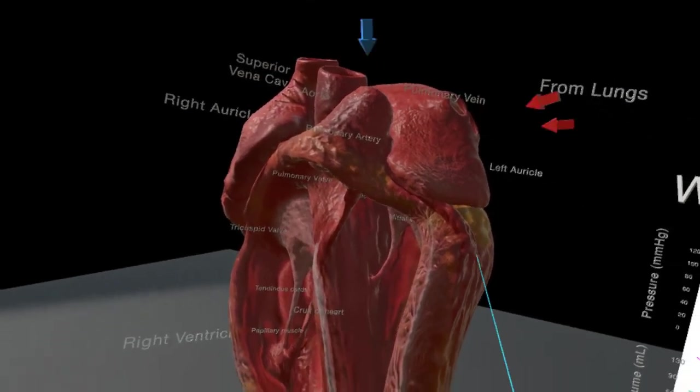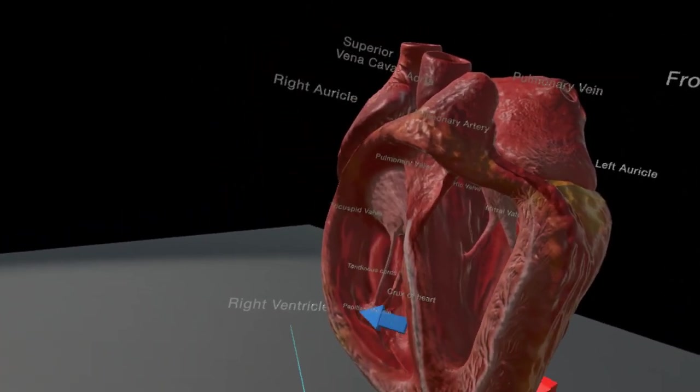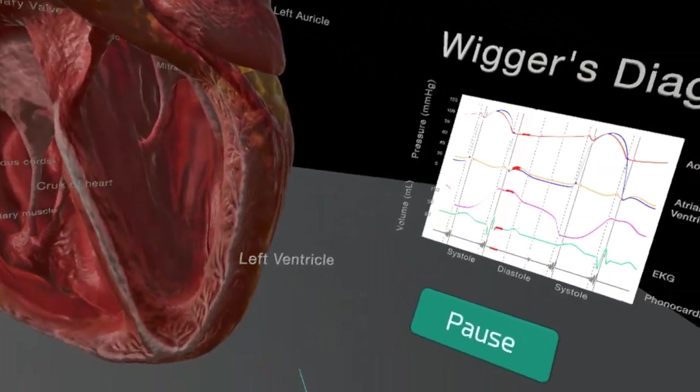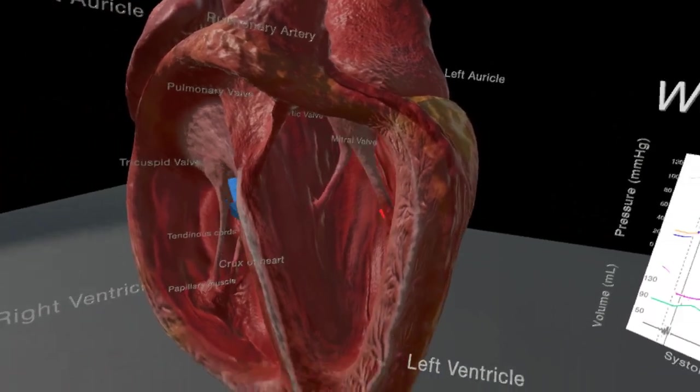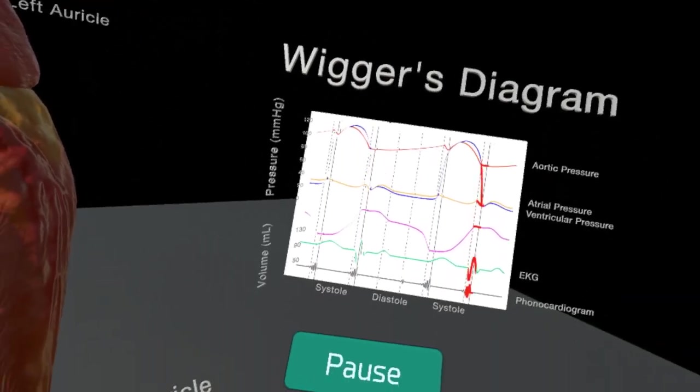So that was the anatomical data, which is basically the understanding of how the part looks and its dissection. But students also try to understand the cardiac cycle through what is called the Wiggers Diagram.